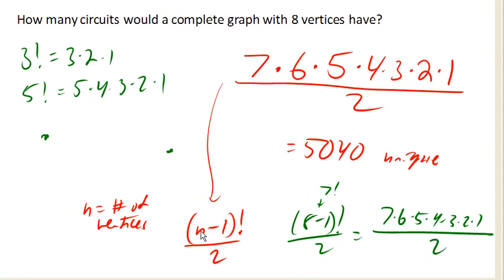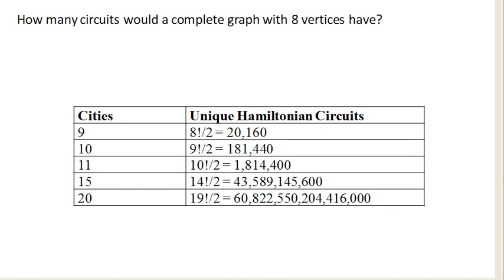So there we go. It turns out that we have all these crazy number of circuits possible. And while 5,000 would be ridiculous to do by hand, a computer could do that pretty easily. But if we go and start adding more cities to our visit, you can see that very quickly, like 20 here.